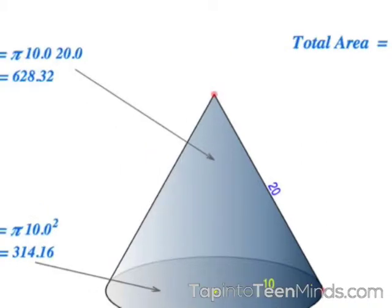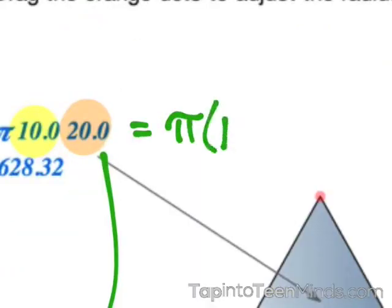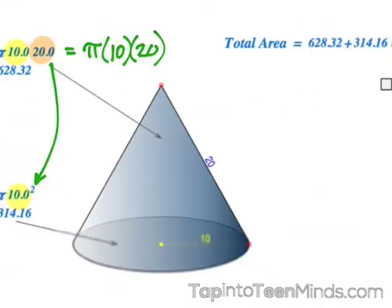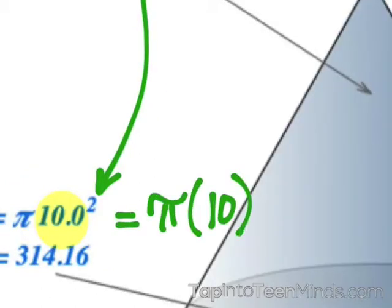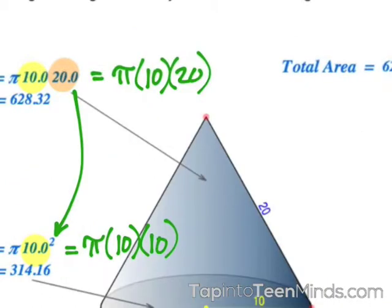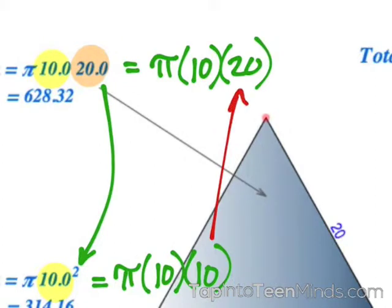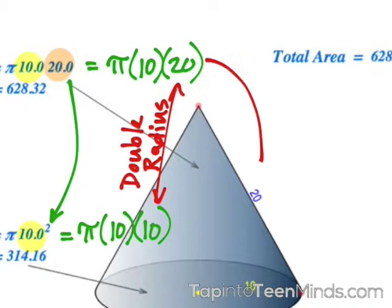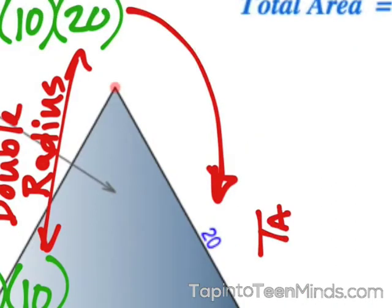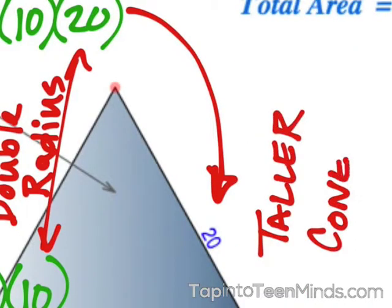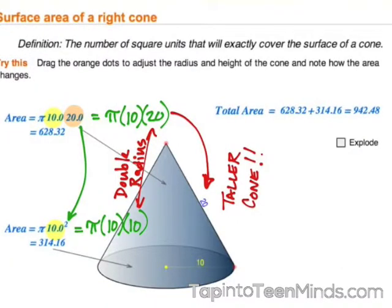If we look at a taller cone, I like to think of the slant height as if we're pulling the center of a flat circle upward. So in this case, we have a slant height that's double the radius. So instead of π r² for the lateral surface, we're dealing with π times the radius times the slant height. This is because the slant height was the radius for that second circle and we've simply pulled it upward.